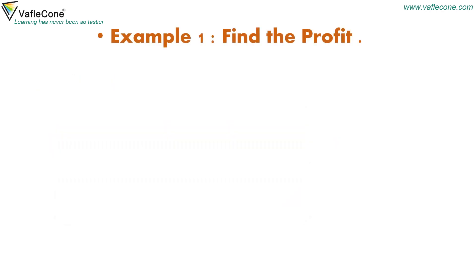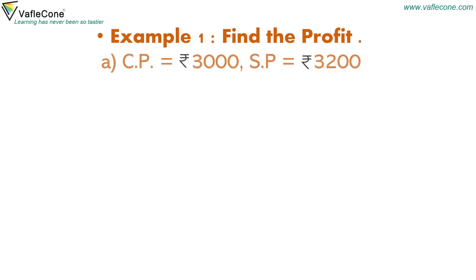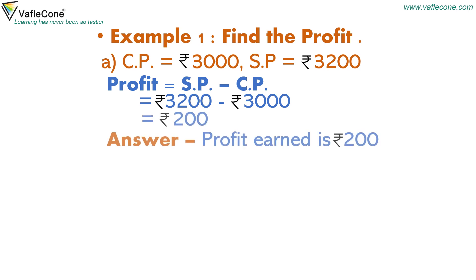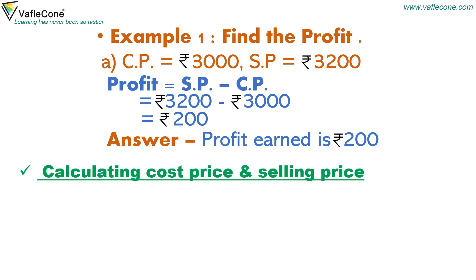Example: find the profit. Cost price equals rupees 3000, selling price equals rupees 3200. Profit equals selling price minus cost price, that is rupees 3200 minus rupees 3000. So profit earned is rupees 200. Now, calculating cost price and selling price.